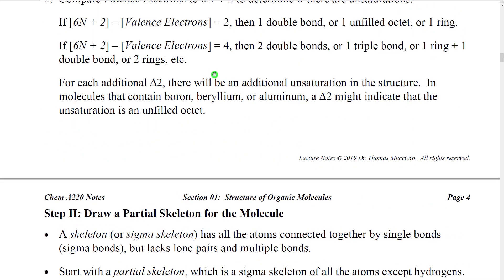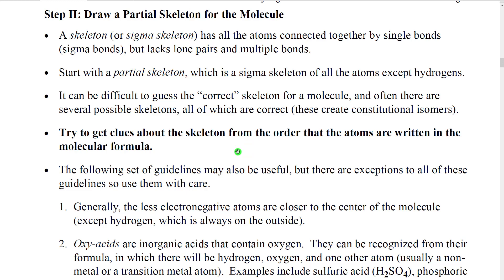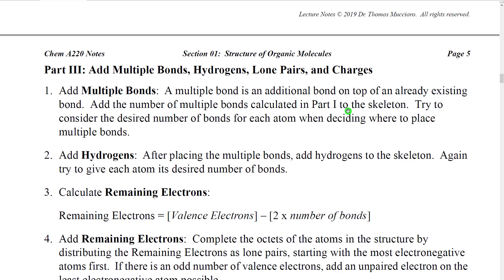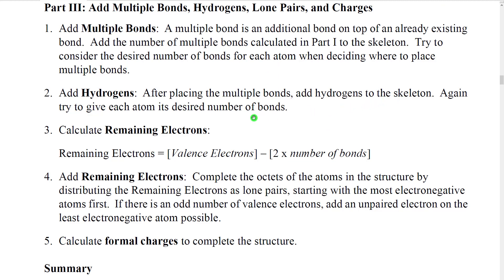First, build a partial skeleton using only the non-hydrogen atoms — hydrogens always go on the outside. With that partial skeleton completed, add the multiple bonds. Multiple bonds are extra bond lines on top of the single bonds in the sigma skeleton. When placing multiple bonds, try to achieve the desired number of bonds on each atom. Then add hydrogens to the skeleton, again placing them to give atoms their desired number of bonds.